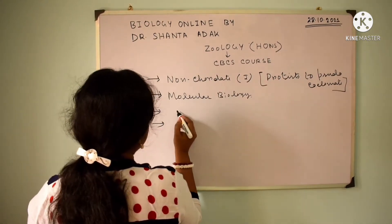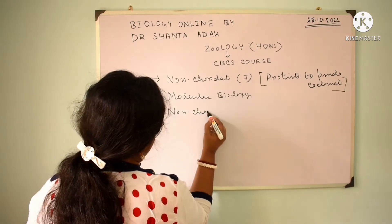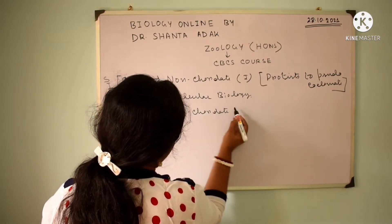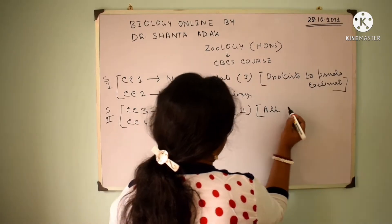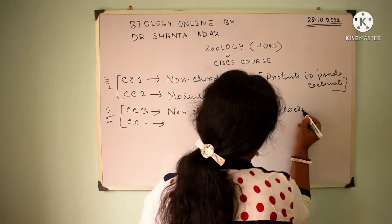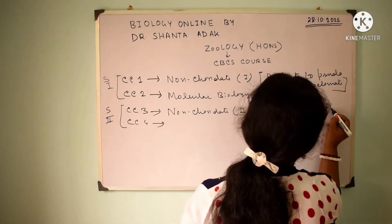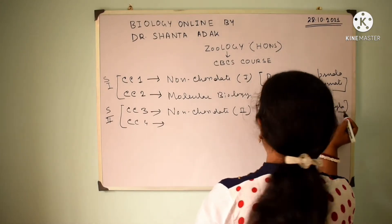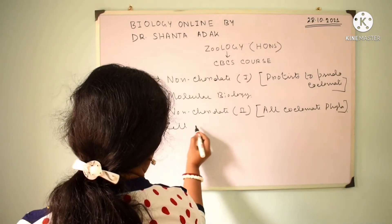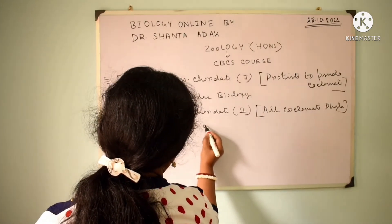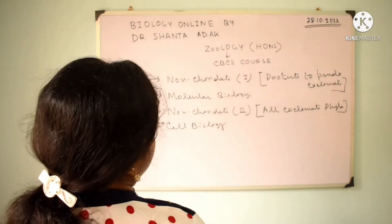In CC3, Non-Chordate Part 2 will be discussed. And what is Non-Chordate Part 2? All Psyllomate phyla will be discussed here. In CC4, we will study the detail of Cell Biology.